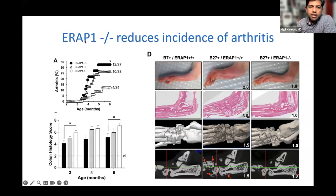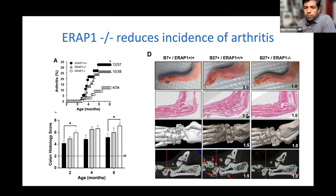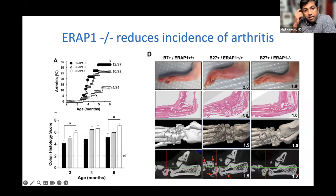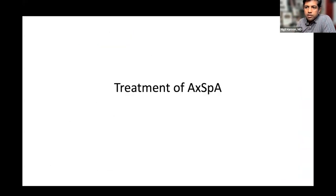A study from Bob Colbert's group at the NIH examined the ERAP1 gene in B27-positive rats that develop arthritis. When ERAP1 was removed from these rats, the arthritis subsided — visible in the images. This suggests ERAP1 may be a therapeutic target, though these are very early days.